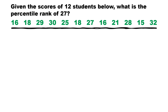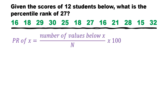The scores are not properly arranged, but that's not a problem because we only need to count the scores that are below the given score, which is 27. The scores smaller than 27 are: 16, 18, 25, 18, 16, 21, and 15 — so there are 7 scores smaller than 27.